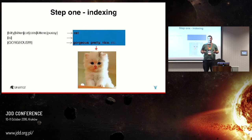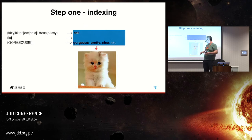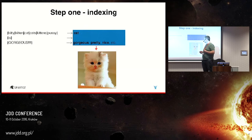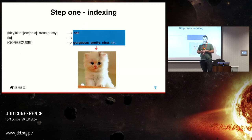In most databases you have IDs pointing to some documents. In Lucene you have the opposite - data, in this case words, pointing to document IDs. Of course we can have more than one document. What Lucene does is it saves those words - called tokens or terms - and points from those to documents in the index. So if you want to search for 'cat', it will be very easy because we already have the links to all matching documents. That is how indexing works.